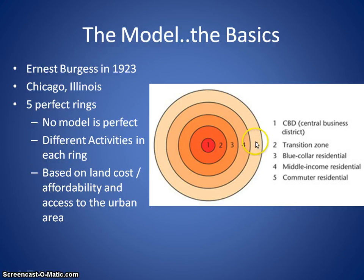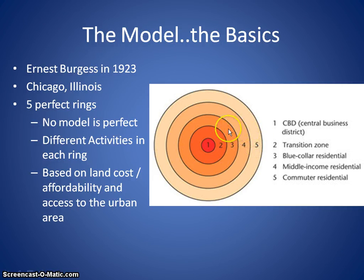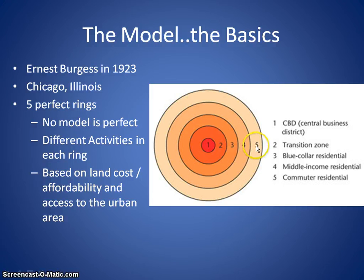Zone five is called the commuter residential area. These are typically people of the highest incomes — in fact, some of the wealthiest — who have estates or large rural residences, but still interact with the urban center on a regular basis. They have some form of personal transportation or are able to take public transit from where they live into the urban center, giving them a bit more freedom of movement.